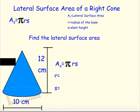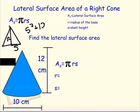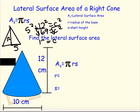We have a cone with a diameter of 10 and a height of 12, but we don't know the slant height. Using the cross section, we have a right triangle with legs of 5 and 12. We use the Pythagorean theorem: 5 squared plus 12 squared equals c squared, which gives 169 equals c squared. Taking the square root, c equals 13. So my slant height is 13.